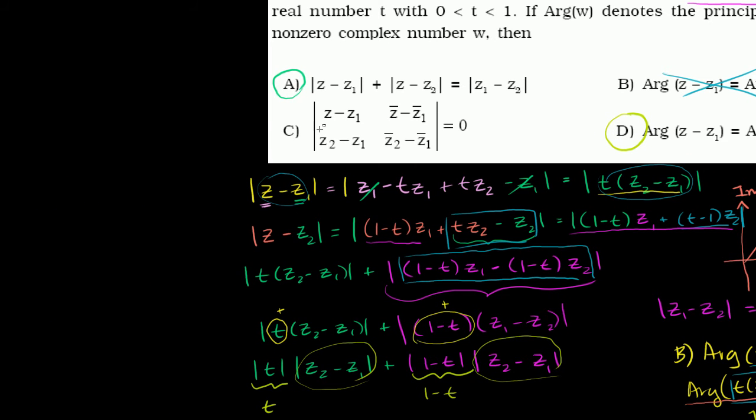Part c. So we have this determinant, and it's claiming that it equals 0. So we have to see if that's true. We can actually try to multiply these out and see if anything interesting happens. But we could even better leverage some of the algebra that we've already done for part a.